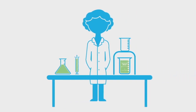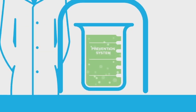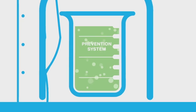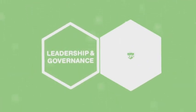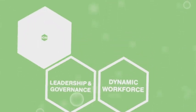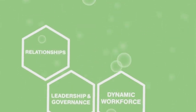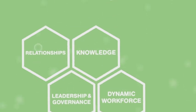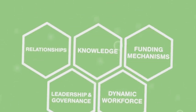To inform the evolving science of systems thinking, there are five essential building blocks in a strong prevention system: leadership and governance, a dynamic workforce that thinks and acts systems, relationships that drive change, knowledge co-creation to action, and funding mechanisms.